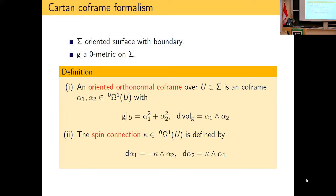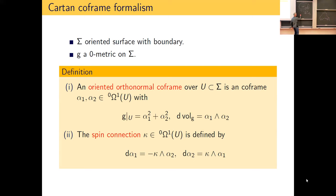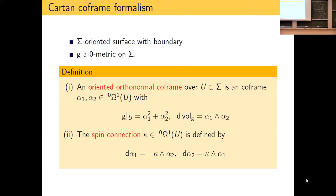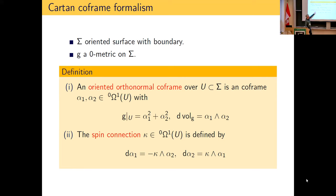The zero cotangent bundle — dual to the zero tangent bundle — is spanned by (1/y)dx and (1/y)dy, so these forms have singularities at the boundary like 1/y. An oriented orthonormal coframe means the metric can be written as α₁² + α₂², and that it's oriented means the volume form for the orientation should be α₁ ∧ α₂.